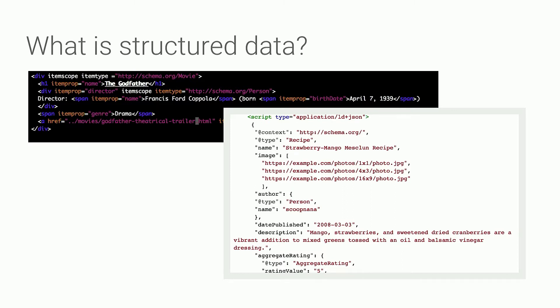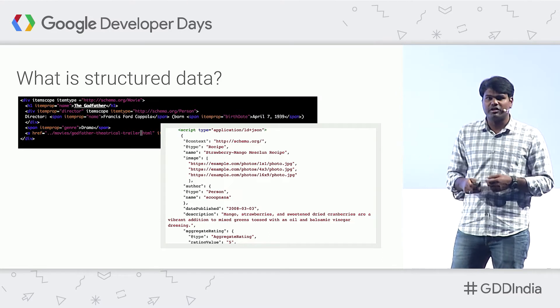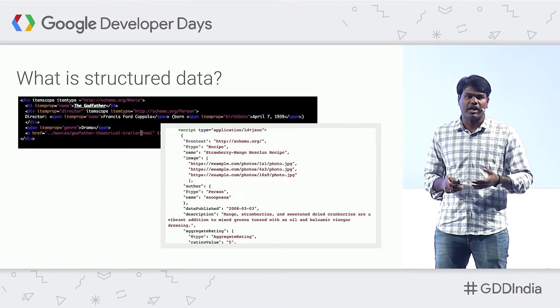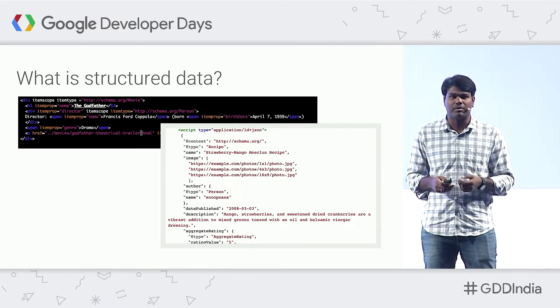As an example, on the left screenshot, without structured data, the webmaster is writing about the movie Godfather and relevant information. But by adding markup, Google understands they are talking about a movie, that the name is The Godfather, and that the director is Francis Ford Coppola. Similarly, in another example, we can tell the webmaster is talking about a recipe because he's marked it up as a recipe with relevant information.